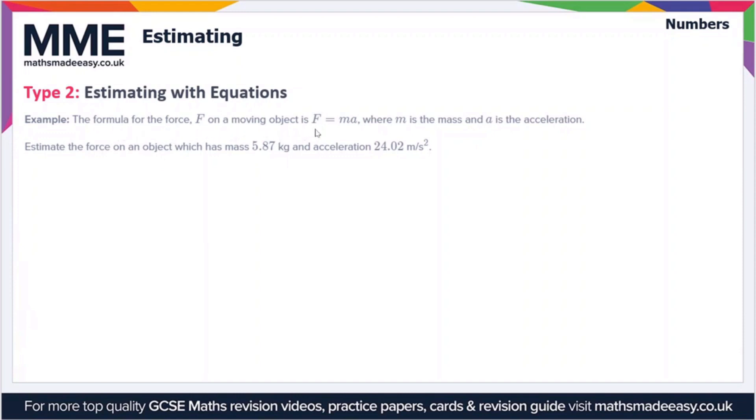Where M is the mass and A is the acceleration. Estimate the force of an object which has mass of 5.87 kilograms and acceleration of 24.02 meters per second squared.